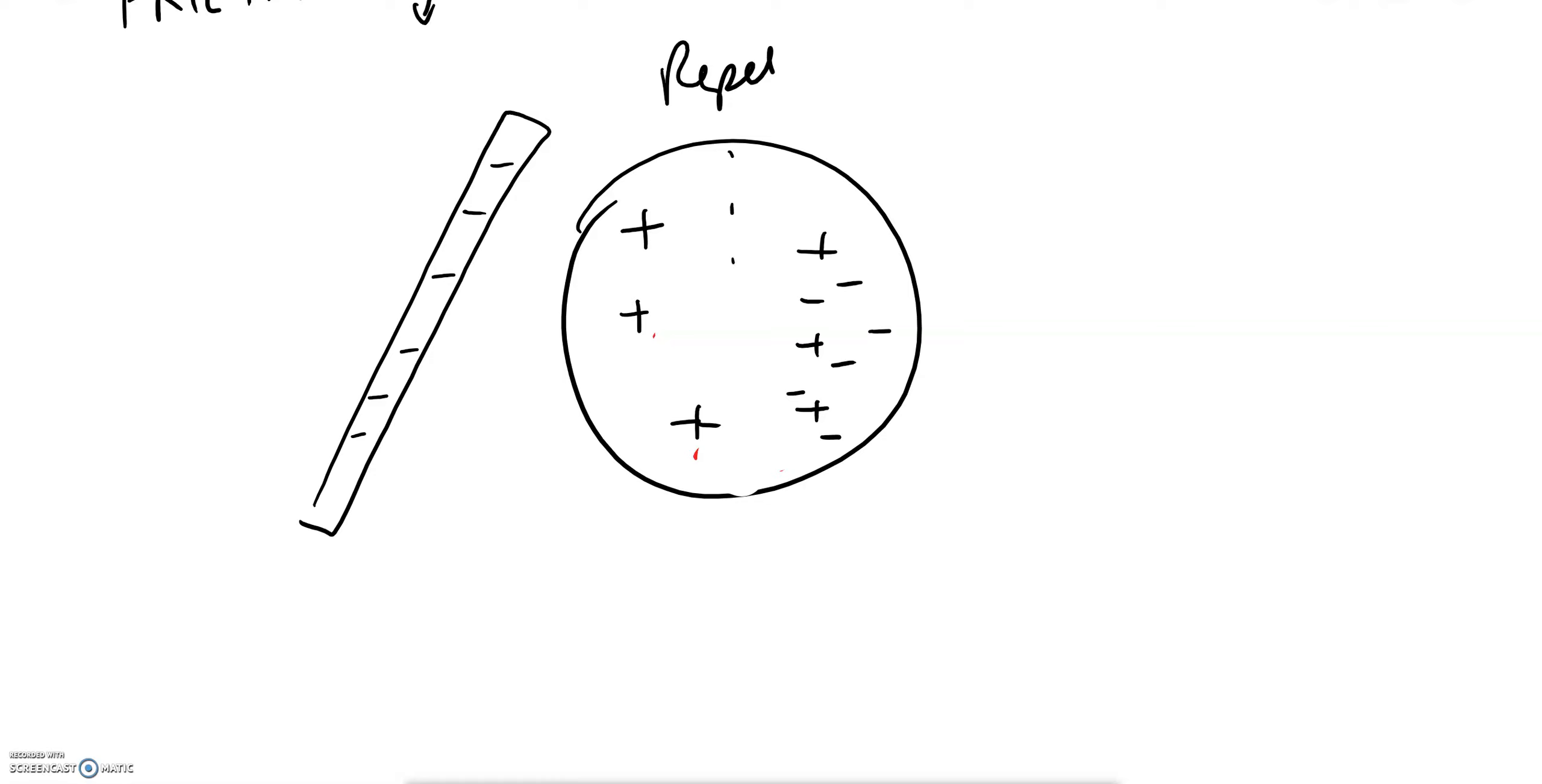So if we now split this ball in half you can see that this side has become positive, this side has become negative because it has six negatives and three positives. This has been charged by induction.